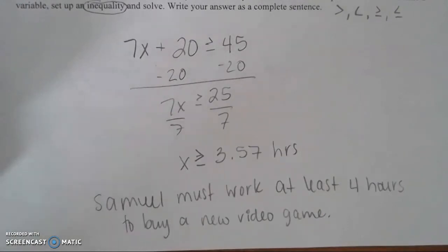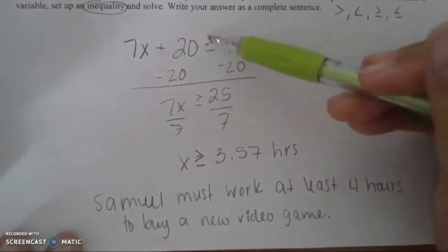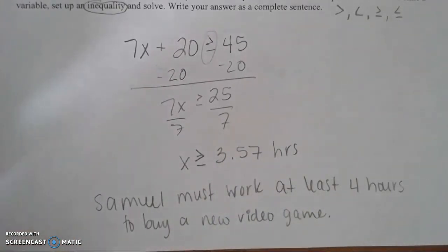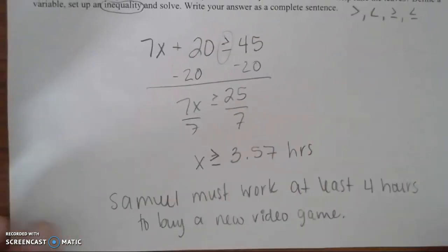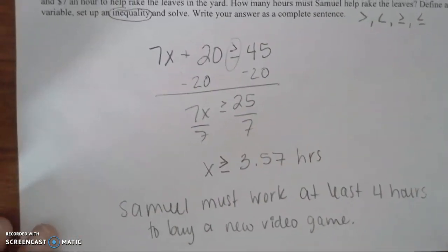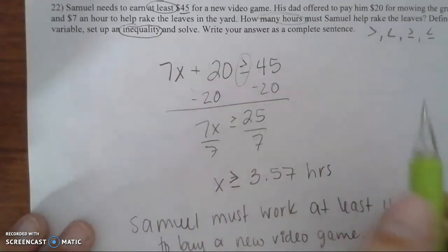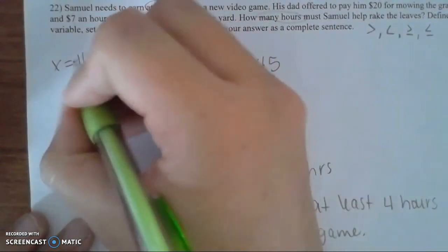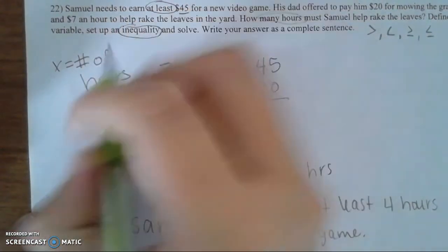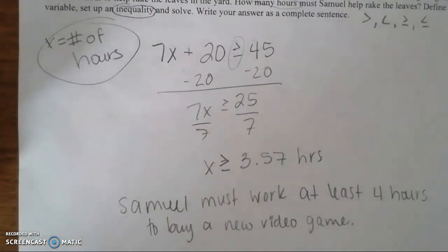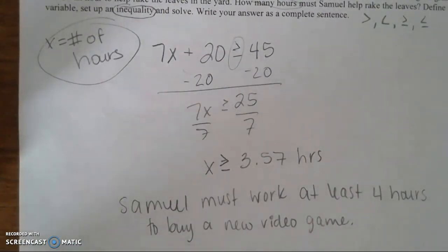Inequalities are similar to equations — you just have an inequality sign instead of an equal sign. If you get a decimal, round it correctly to keep the statement true. Also, I forgot to define the variable earlier: let x equal the number of hours. Make sure you read directions and follow all steps. If you have any questions, email me or your teacher.